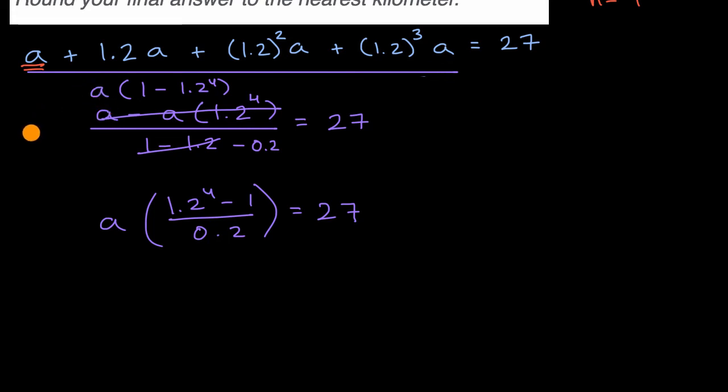So again, all I did is I took the A out of the fraction, so it's out here, and I multiplied the numerator and the denominator by a negative. The numerator multiplied by a negative would swap these two, and then multiplying negative 0.2 times the negative is just positive 0.2.